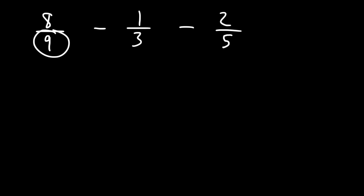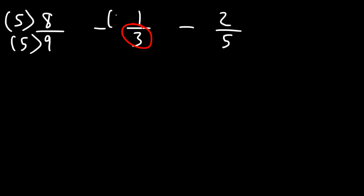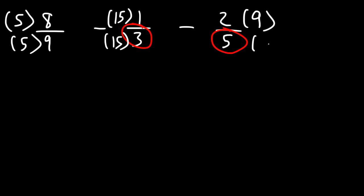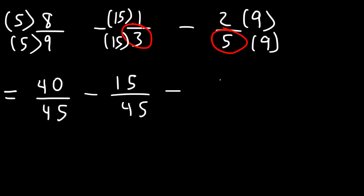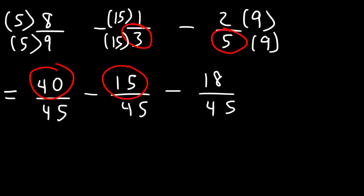45 divided by 9 is 5, so multiply the first fraction by 5 over 5. 45 divided by 3 is 15, so multiply the second fraction by 15 over 15. And 45 divided by 5 is 9, so multiply the last fraction by 9 over 9. 5 times 8 is 40, and 5 times 9 is 45. 15 times 1 is 15, and 15 times 3 is 45. 2 times 9 is 18, and 5 times 9 is 45. Now subtract: 40 minus 15 is 25, and 25 minus 18 is 7. So the answer is 7 over 45.